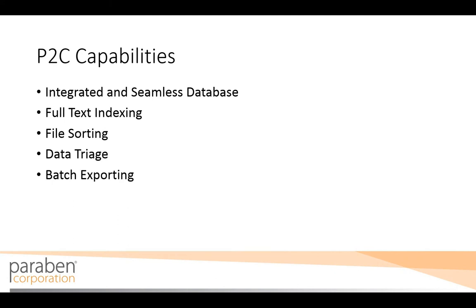P2C's file sorting feature sorts each file into different categories such as documents, compressed files, graphics, text files, etc., based on the file header. This makes it easy for an examiner to find and analyze specific types of data quickly. It also allows you to filter data based on different criteria.